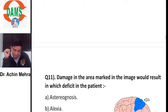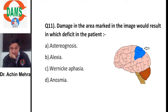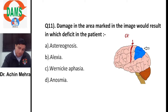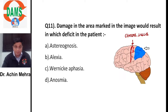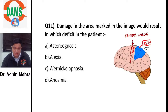The area behind the central sulcus is areas 1, 2, and 3 — the primary sensory area. Behind this are areas 5 and 7, the sensory association area, responsible for stereognosis, graphesthesia, and two-point discrimination. So damage here causes loss of stereognosis.